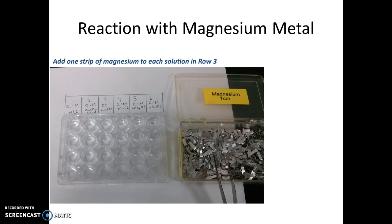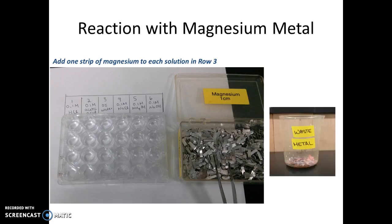There may be unreacted pieces of magnesium remaining at the end — do not let those go down the drain. There will be a metal waste container in the lab; filter out any leftover magnesium strips and place them in that container. The solutions can be washed down the drain. Wash the plate with soap and water and return it to the bin at the front of the room.